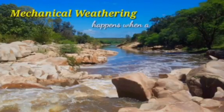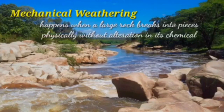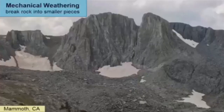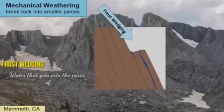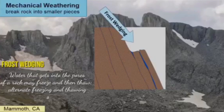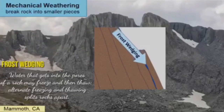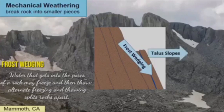Mechanical weathering happens when a large rock breaks into pieces physically without alteration in its chemical composition. Since frozen water expands to a higher volume than liquid water, ice expands and wedges into cracks in rocks, breaking them into pieces. Rock fragments fall and collect at the base of a cliff, creating tall slopes — a good clue that frost wedging is happening above.